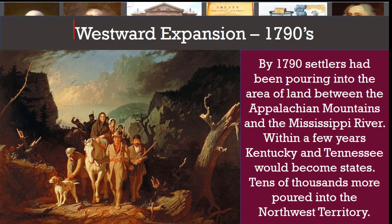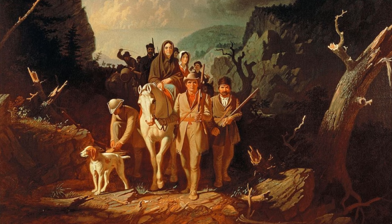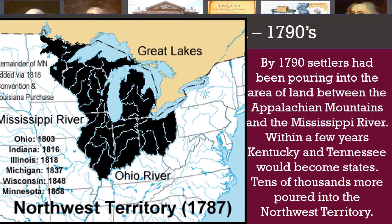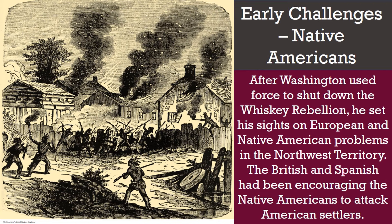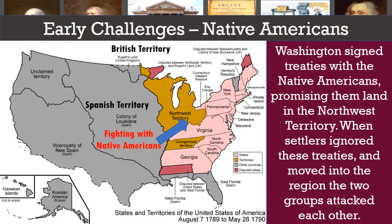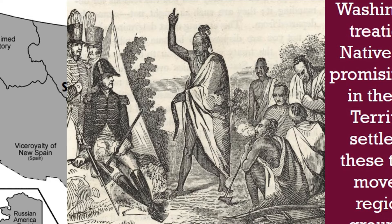Let's start with western expansion. By 1790, settlers had been pouring into the area of land between the Appalachian Mountains and the Mississippi River. Within a few years, Kentucky and Tennessee would become states. Meanwhile, tens of thousands more poured into what was known as the Northwest Territory, and this led to some early challenges for America. The British and Spanish had been encouraging the Native Americans to attack American settlers. Washington signed treaties with the Native Americans promising them land in the Northwest Territory, but when settlers ignored these treaties and moved into the region anyway, the two groups attacked each other.